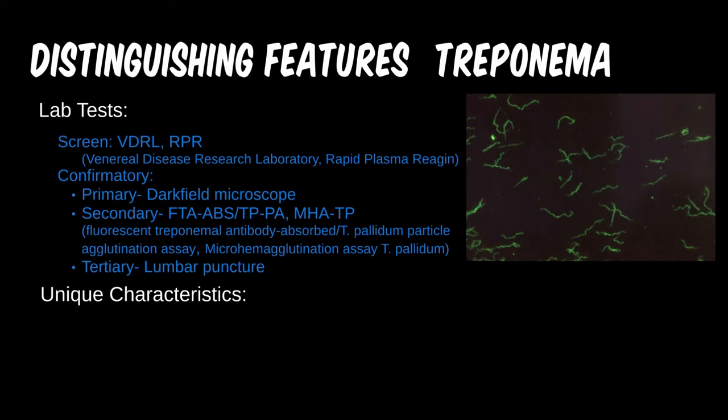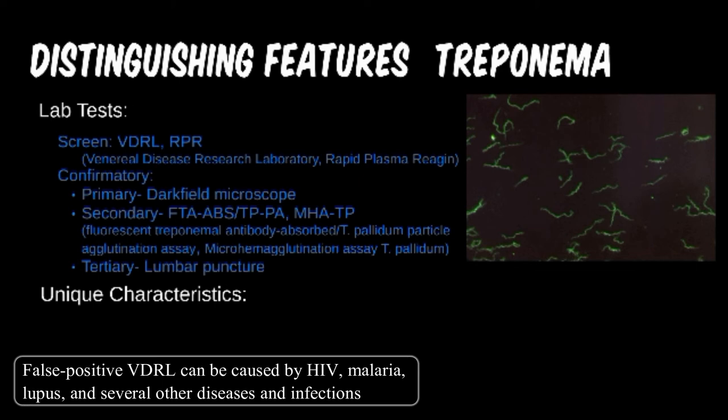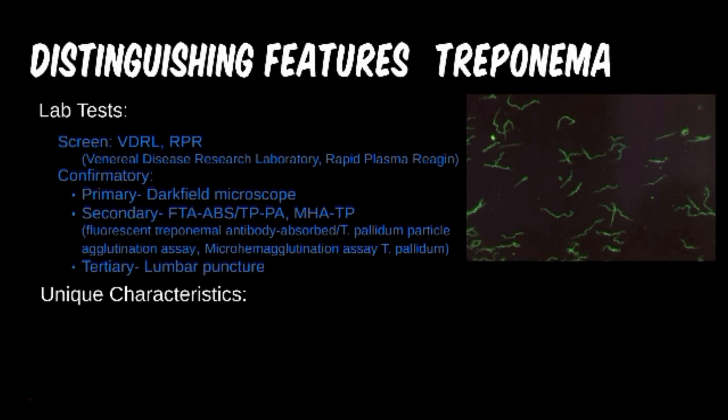The FTA antibody and MHA assay are used to confirm that the antibodies from the screening tests are the correct ones. For tertiary syphilis, neurosyphilis is the most concerning subclass. By taking a lumbar puncture of the cerebral spinal fluid, we may not see the microbe but can run analysis for antibodies and white blood cell counts. That was a lot of testing, based on tiers of screening and confirmation as well as the severity of the disease.